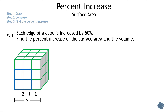Now we have a 3 by 3 by 3 cube — we've increased the cube by 50%. Let's find the percent increase of the surface area and the volume. First, the surface area of the original cube: multiply the length and width of one face, which is 2 times 2, then multiply by 6 sides. 2 × 2 × 6 = 24, so the surface area of the original cube is 24 cm².